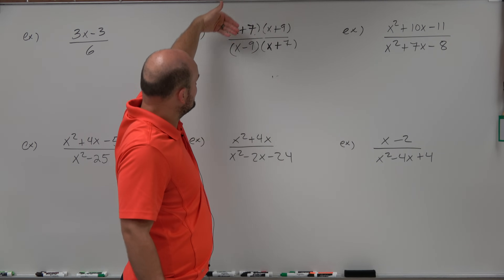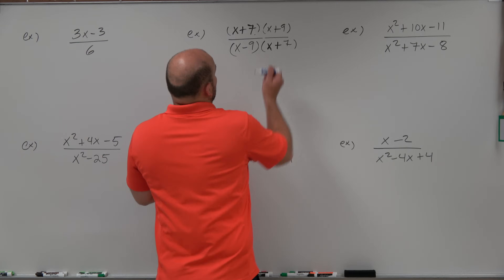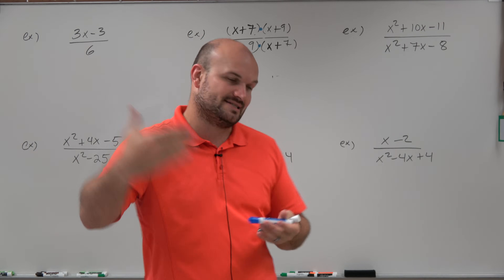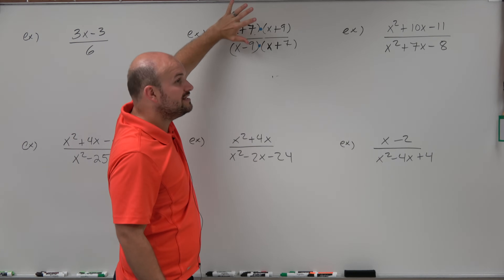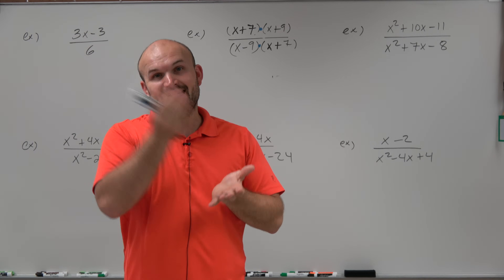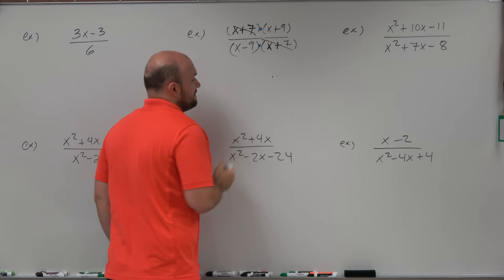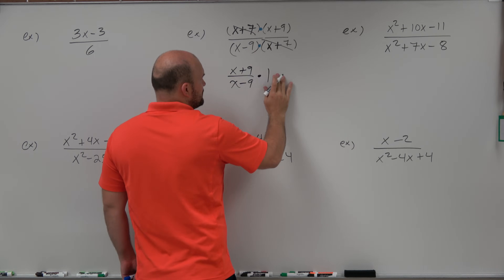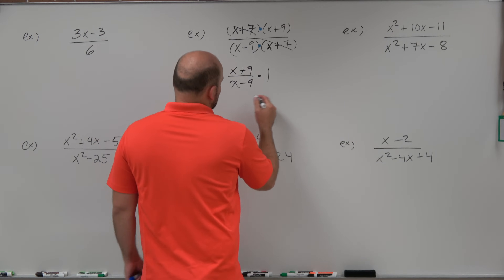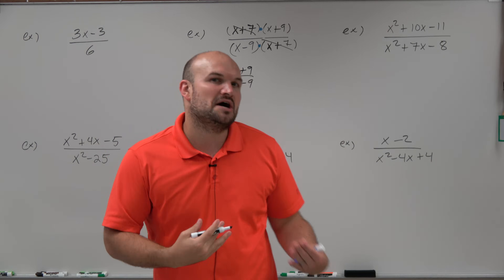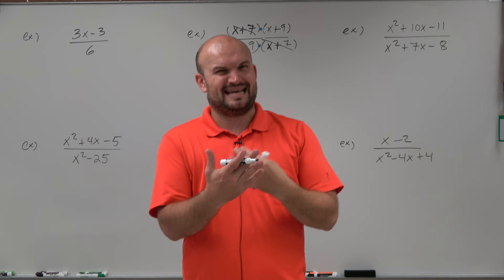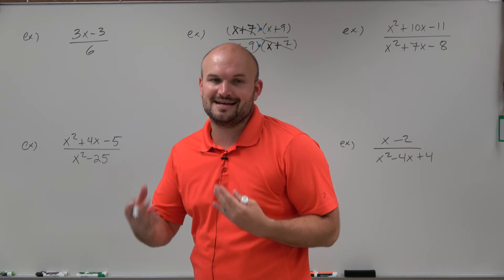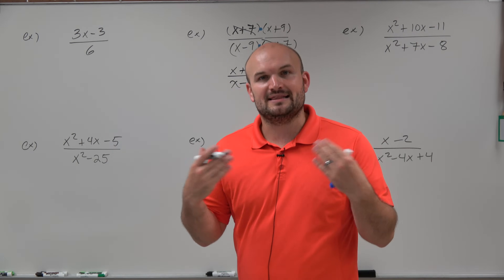Let's start with a problem where our terms are already separated by multiplication. We have four terms: x plus 7, x plus 9, x minus 9, and x plus 7 — each separated by multiplication. Since x plus 9 and x minus 9 are not exactly the same expression, we cannot divide them to equal 1. But x plus 7 over x plus 7 does divide to equal 1, so our simplified answer is x plus 9 over x minus 9.